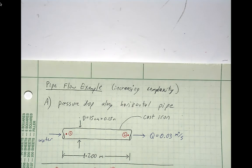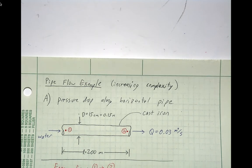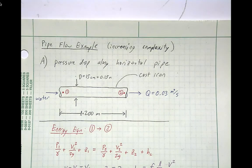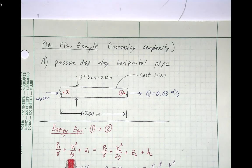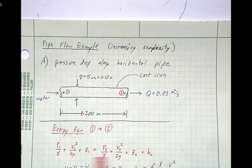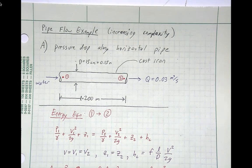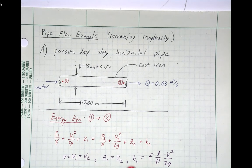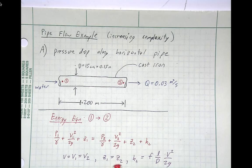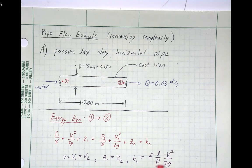To relate the pressures between points 1 and 2, we apply the energy equation from 1 to 2. We have the pressure head, velocity head, and elevation head for each of the two points, and a head loss term on the outflow side. We know that the velocity at 1 and 2 are equal, the elevations are equal, and the head loss is just the major head loss — no minor head losses here.